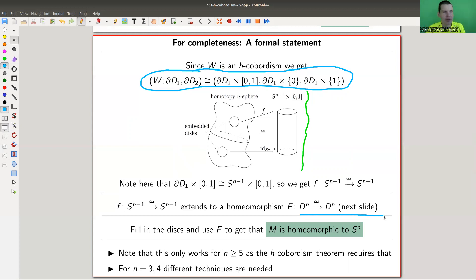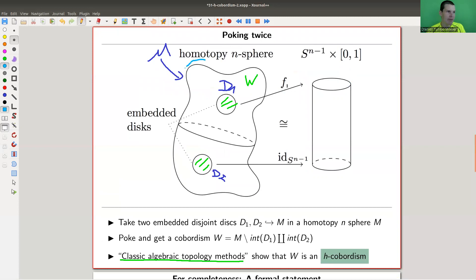So the only thing you need to do is you need to fill in the holes in a consistent way. And you use Alexander's trick to do it, which I'm going to explain on the next slide. Essentially that's what you need to do. So you get from the H-cobordism theorem that W is essentially a cylinder.